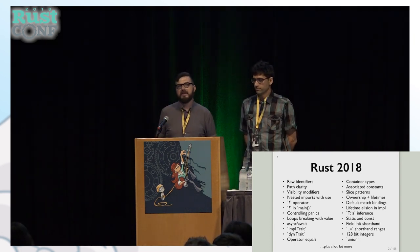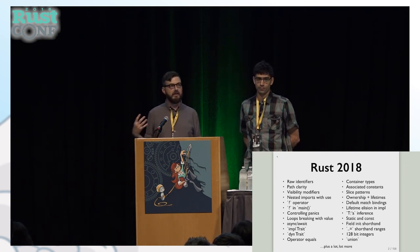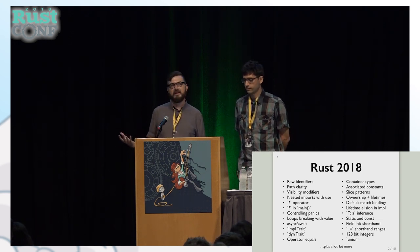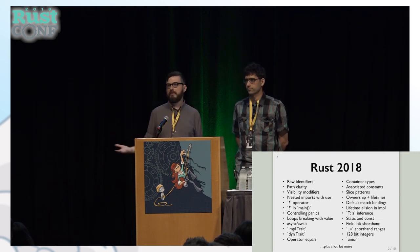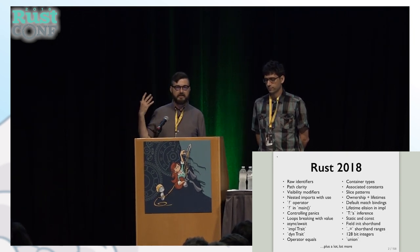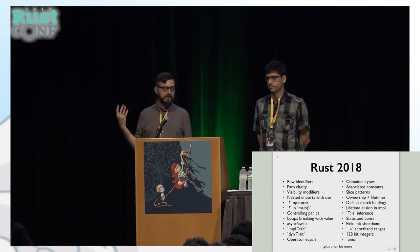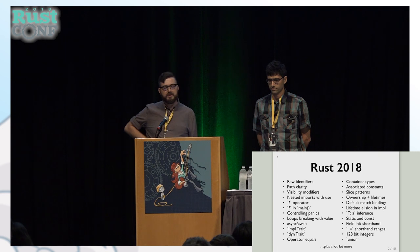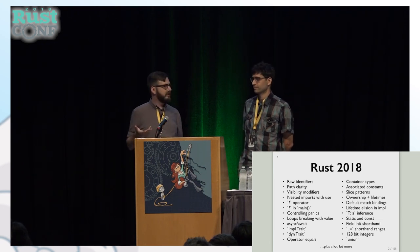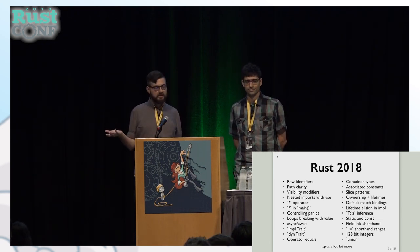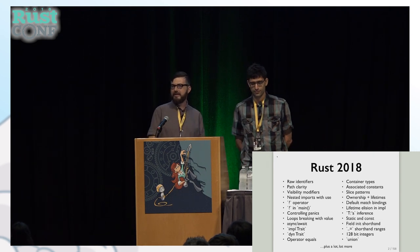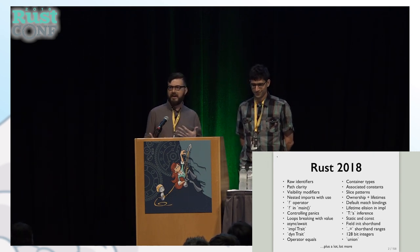I want to talk about one of the major focuses of this year, which has been Rust 2018, the new edition of Rust. It's basically the culmination of the last four years of work since Rust 1.0 came out. There's a huge list of features connected with Rust 2018 — raw identifiers, path clarity, visibility modifiers, nested imports, a question mark operator you can now use in the main function.